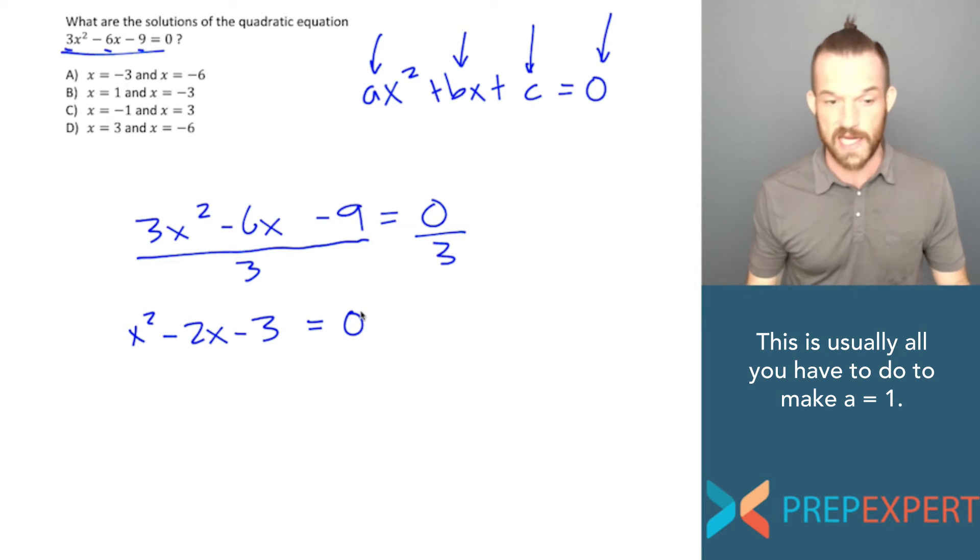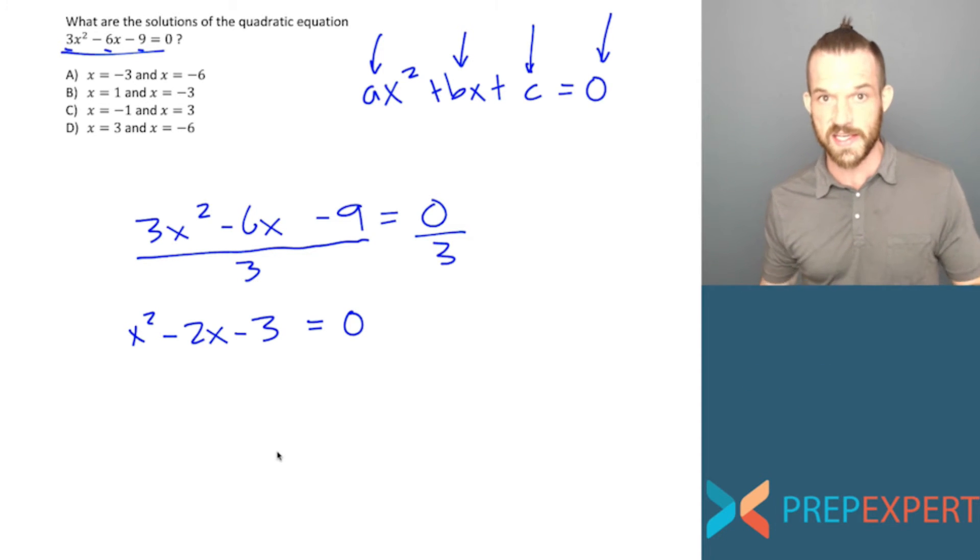So now I have a new version of the quadratic in which the a term is, in fact, equal to one. The coefficient of the x squared term is equal to one. In my experience, they will only ever ask you to factor quadratics on the SAT when the a term is one. Even if it looks like, as it did here, they want you to factor it when the a term is not one, there's usually a first step you can take that will turn the a term into one to make it much easier to factor.